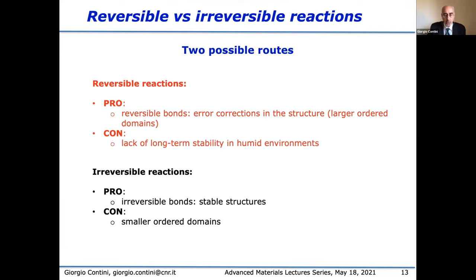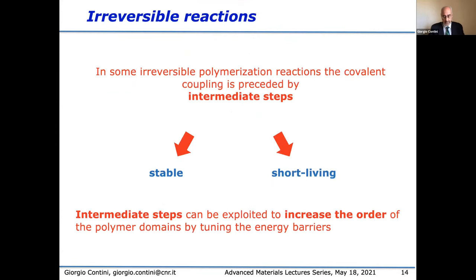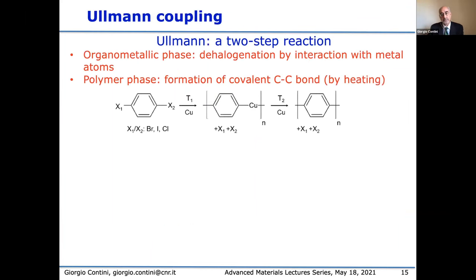Can we do something to increase the size of the ordered domain? We can use irreversible polymerization reactions preceded by intermediate steps — stable or short-lived — and use these intermediate steps to increase order by tuning the energy barrier inside the different steps. We concentrate our attention on Ullmann coupling, the most used chemical reaction. It is a two-step reaction: in the first step we have formation of the organometallic phase with dehalogenation by interaction with metal atoms, and in the second step formation of the polymers via C-C bond formation.